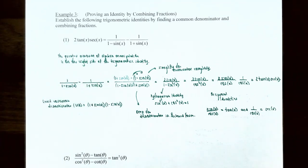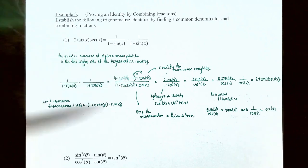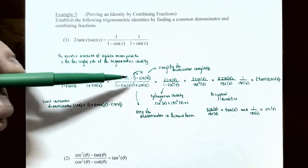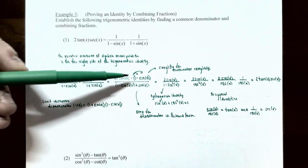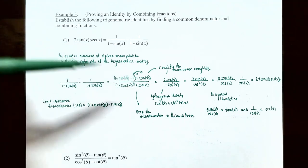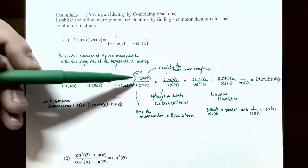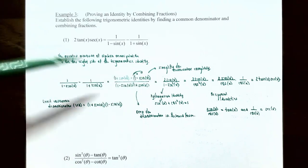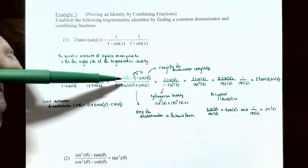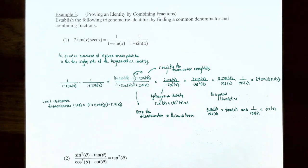Be very careful about the subtraction sign — it is in front of the entire expression (1 − sin x), so this negative sign needs to be distributed to both terms, the 1 and the negative sin x. You'll have 1 + sin x − 1 + sin x in the numerator. The 1 − 1 cancels out to 0, and sin x + sin x gives you 2 sin x in the numerator.